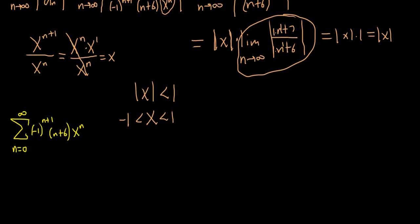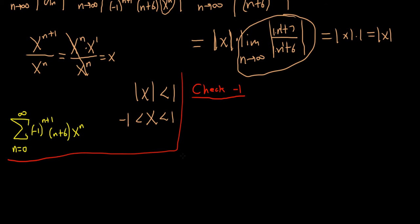Let's check negative 1 first. This checking usually requires knowledge of all the series tests. So we have the infinite sum as n runs from 0 to infinity. We just take negative 1 and plug it in for x. So we have negative 1 to the n plus 1, over n plus 6, times negative 1 to the n — that's our x replaced with negative 1.